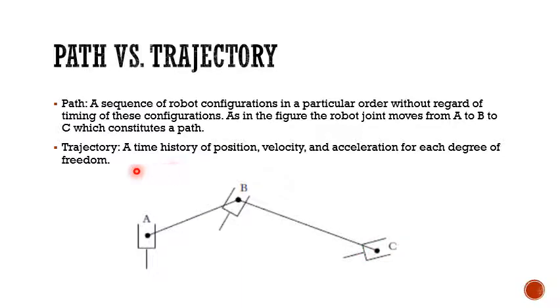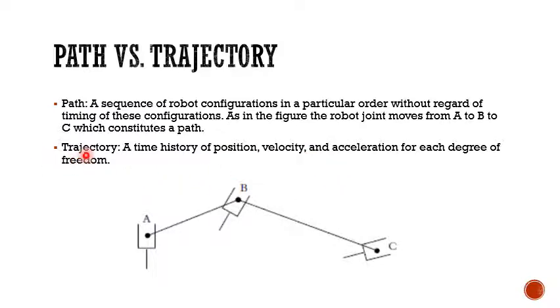On the other hand, trajectory is basically a time history of position, velocity, and acceleration of each degree of freedom of the robot. So for a six-degree-of-freedom robot, every motor or degree of freedom has a time history of position, velocity, and acceleration — that is basically the trajectory, which we have already discussed in earlier lectures.